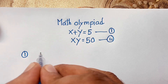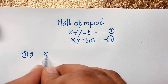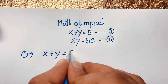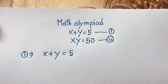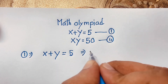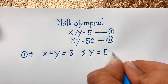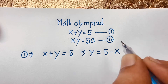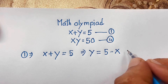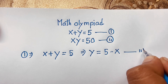Our first equation is x plus y is equal to 5. You can see easily that y is equal to 5 minus x — I just move the positive x to the other side, so it becomes negative x. This is our third equation.